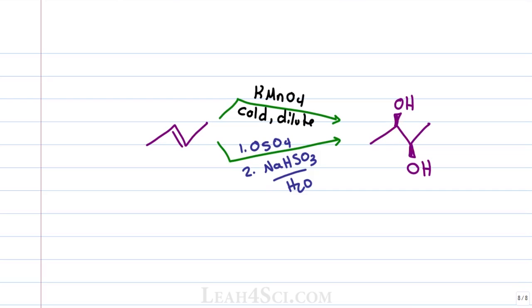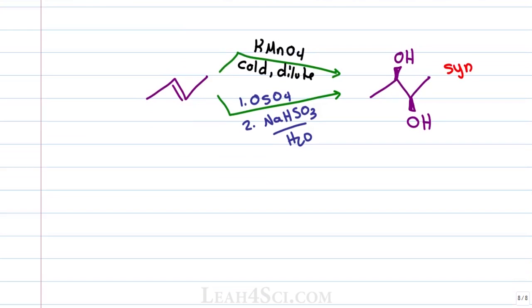The two reactions you've probably covered for this are reacting an alkene with KMnO4 in cold dilute conditions, this will add an OH to each carbon, or osmium tetroxide, OsO4 followed by H2O2 or NaHSO4 and H2O. Both of these will give you a syndiol which is why it's called dihydroxylation.